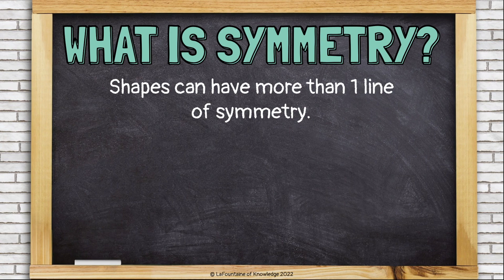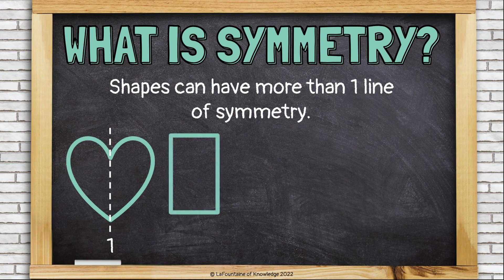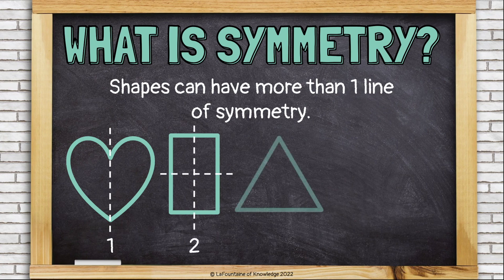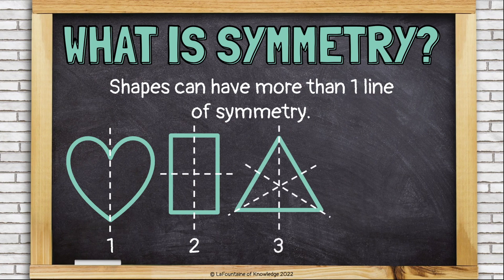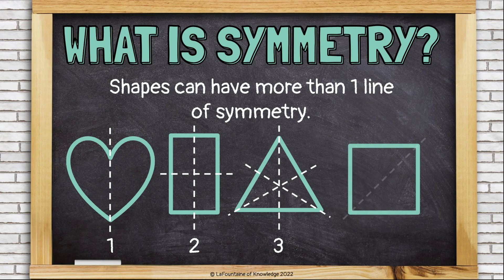Shapes can have more than one line of symmetry too. The heart has one line of symmetry. This rectangle has two lines of symmetry. This triangle has three lines of symmetry. And this square has four lines of symmetry.